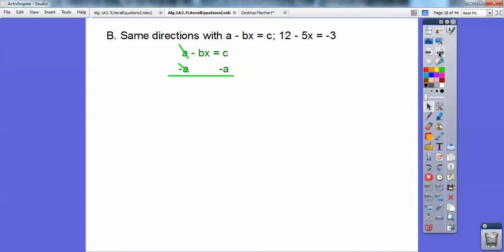All right, so first we're going to take away that a from both sides. So minus a, minus a on both sides, and that negative is still with the b, so it's minus bx. A lot of kids want to drop that off. It's still there. Got to be careful with that.